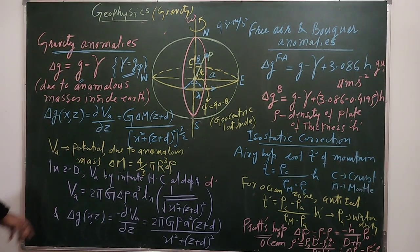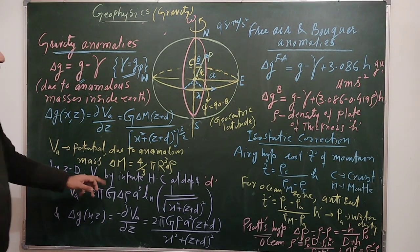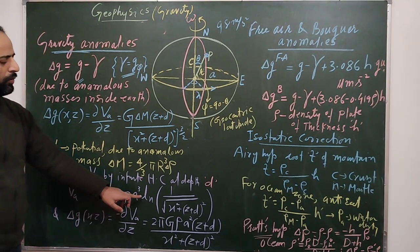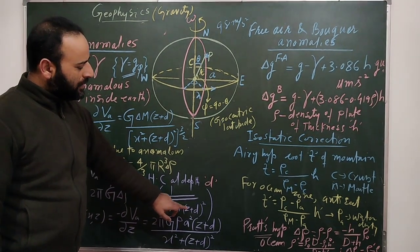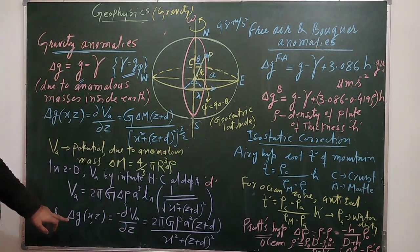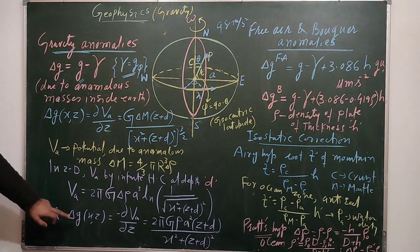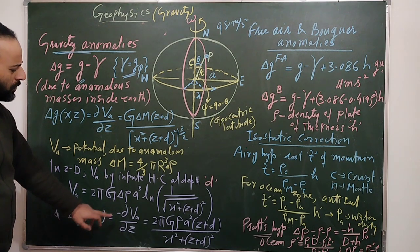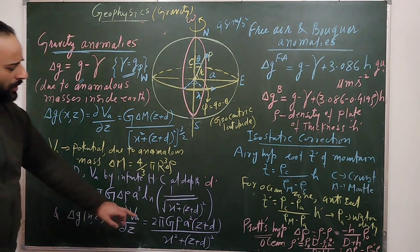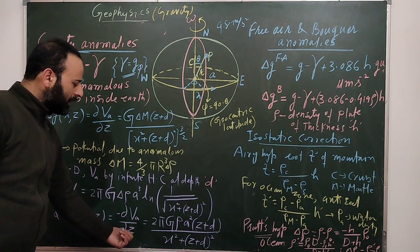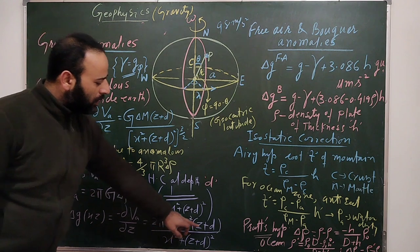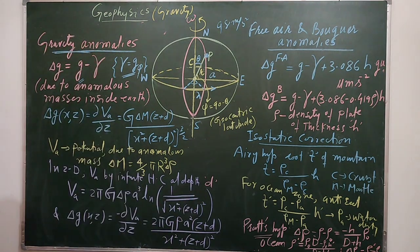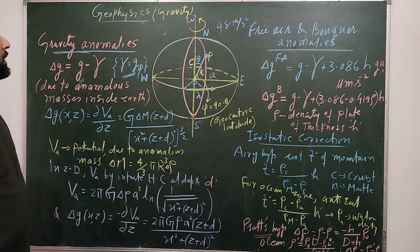In two dimensions, the anomalous potential Va for an infinite horizontal cylinder at depth d is given by 2πG·Δρ·a³·ln(1 / √(x² + (z + d)²)). To calculate the gravity anomaly — the change in g with depth at a point — we take the negative gradient of Va, i.e., the partial derivative of Va with respect to z, where d is the depth at which the anomalous mass lies.